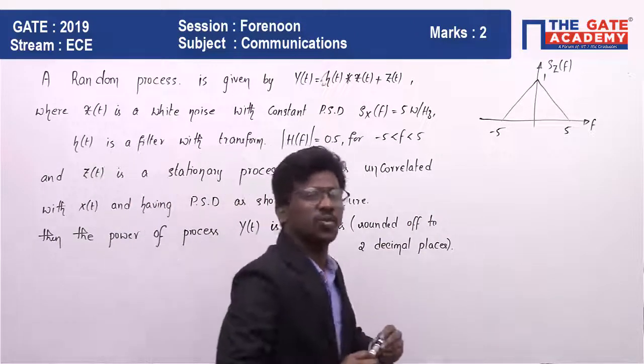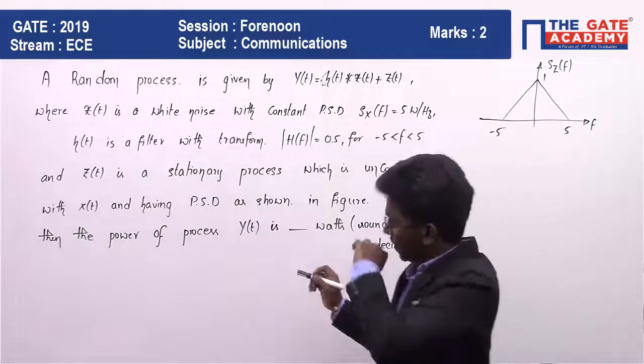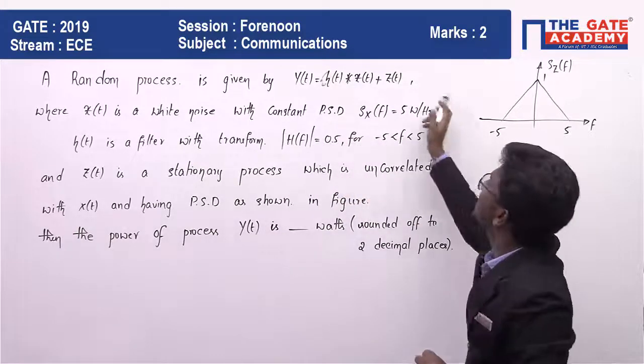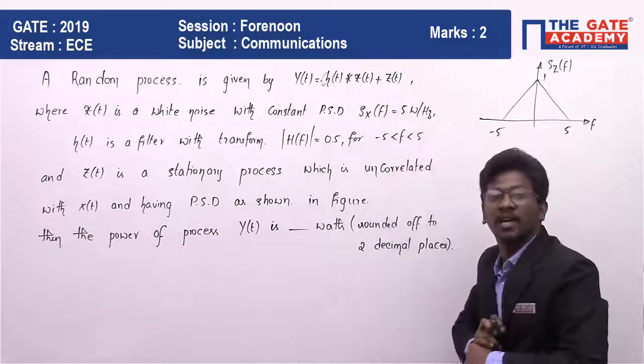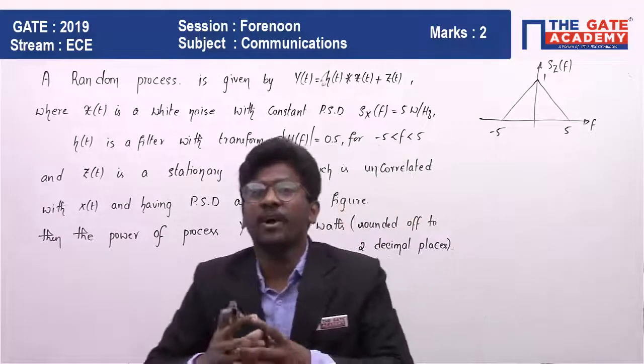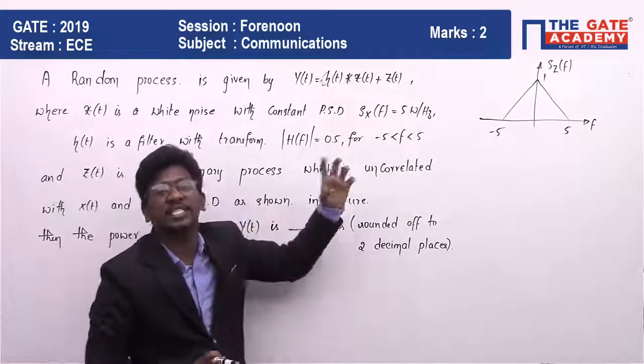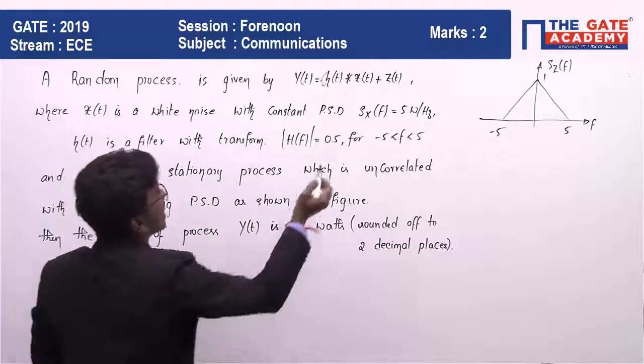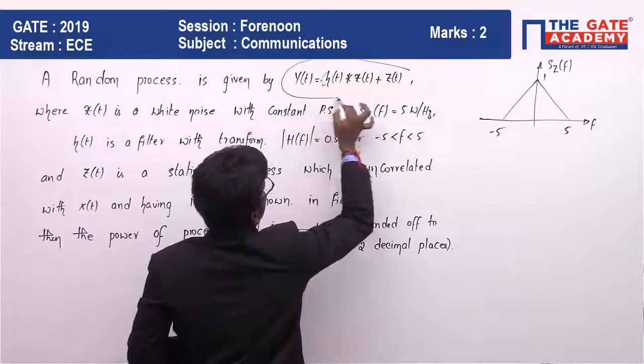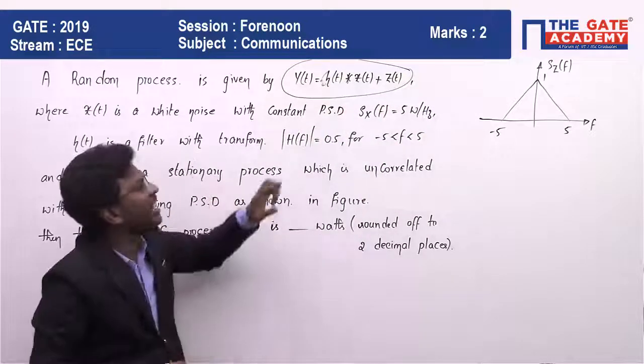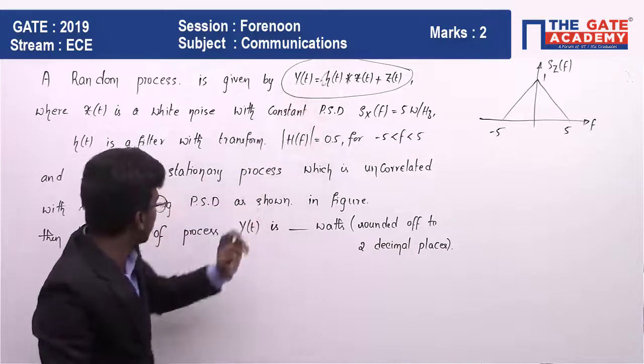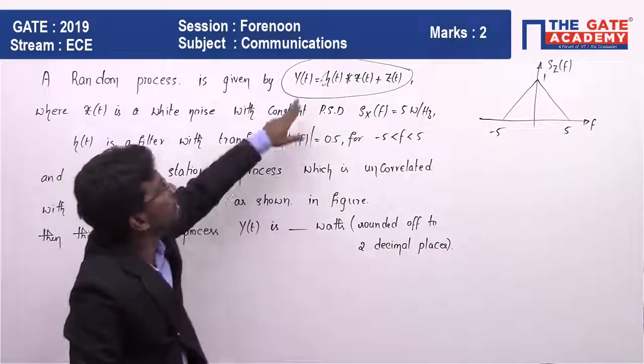If you read this question, first what you need is output power and what he has given is the power spectral densities. How will we find the power? If we take area under a power spectral density, we will get the power. That is the basic idea.